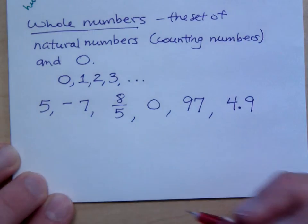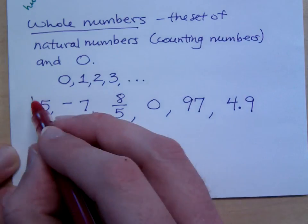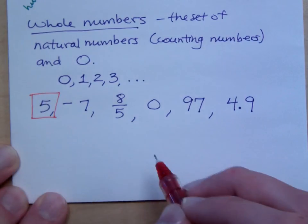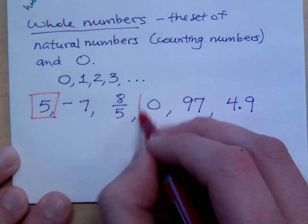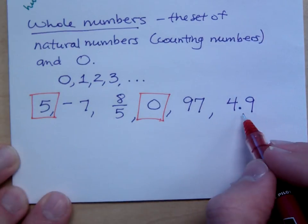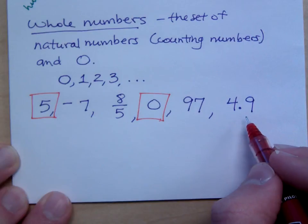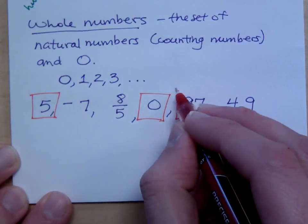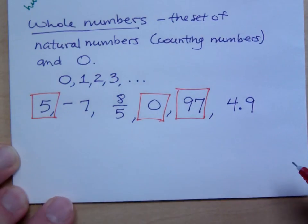What are the whole numbers? 5, 0, and 97. So 5 is a whole number. We said 0 is a whole number, right? See it right here. And 4.9? No. 97? Yes, 97. These are examples of whole numbers.